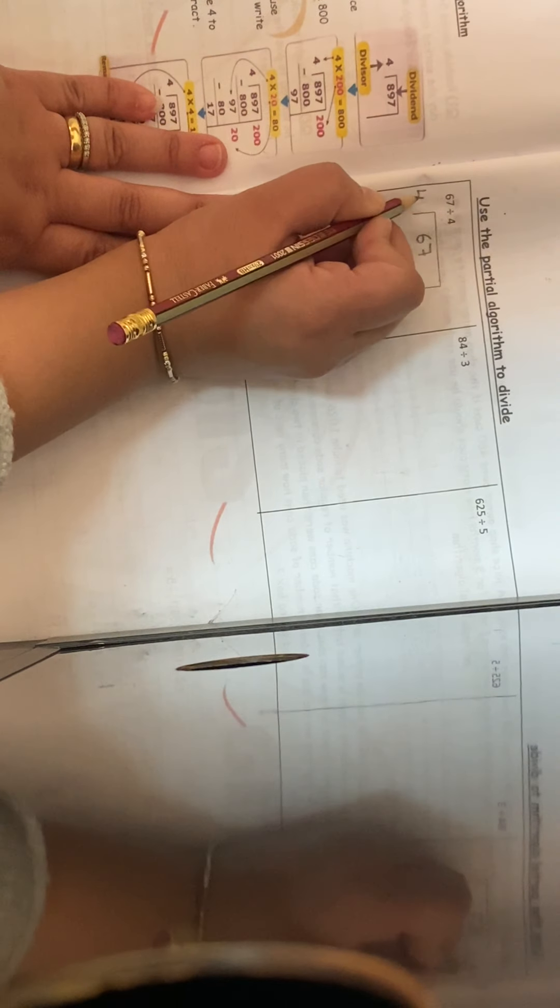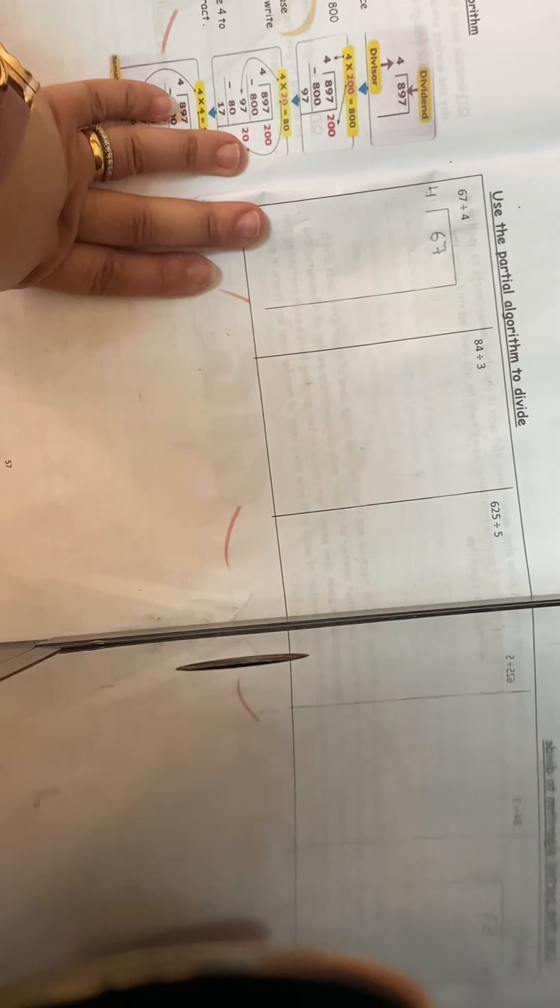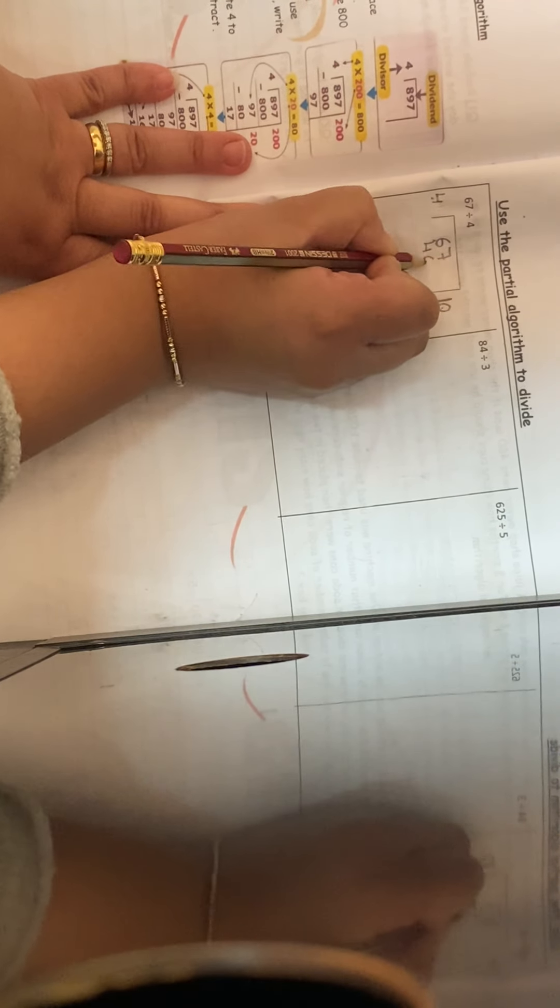What times 4 gives me 60? I will make it multiple of 10. What times 4 gives me 60? I will not find anything. 50, no. 40, yes, I will find the 10. So 10 times 4 is 40. And I will do minus.